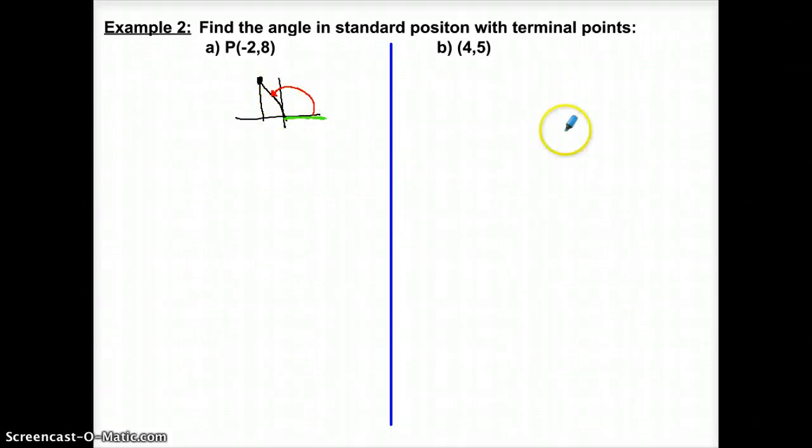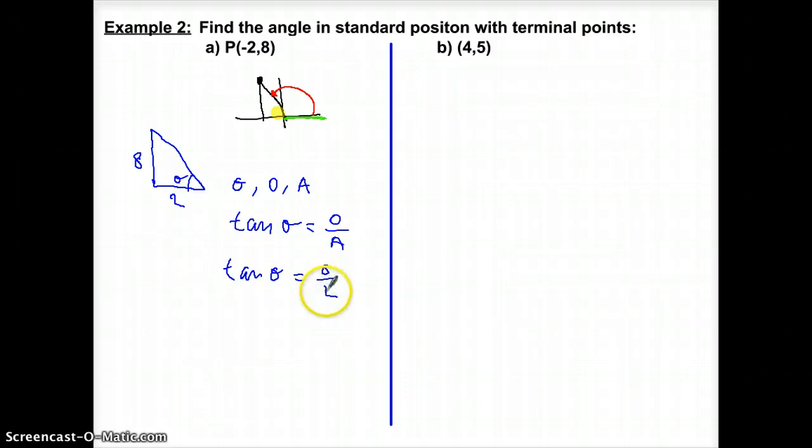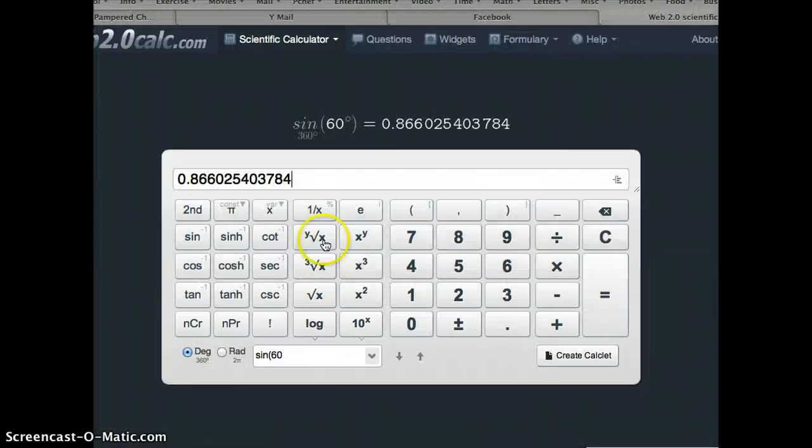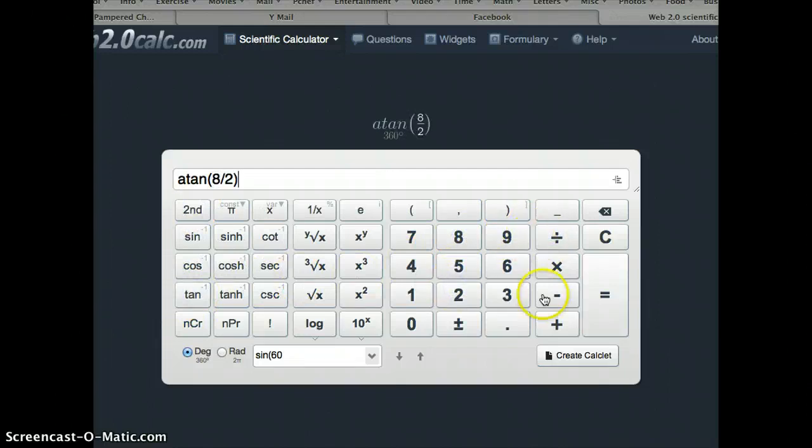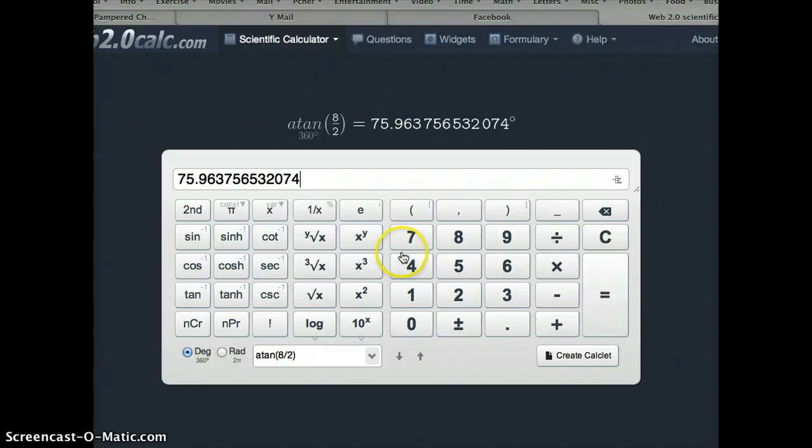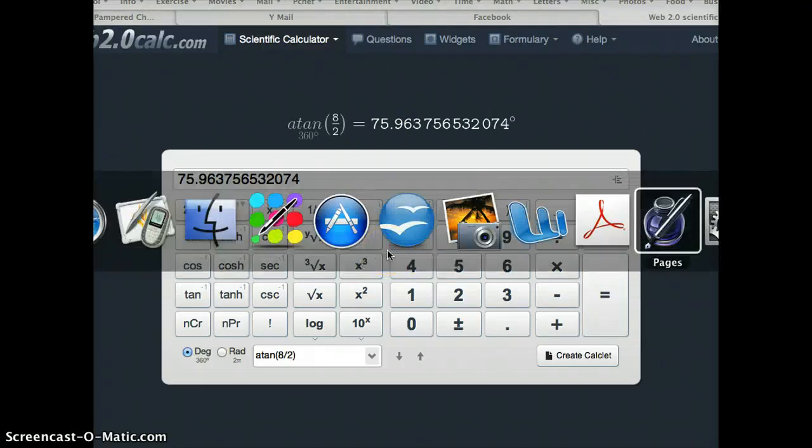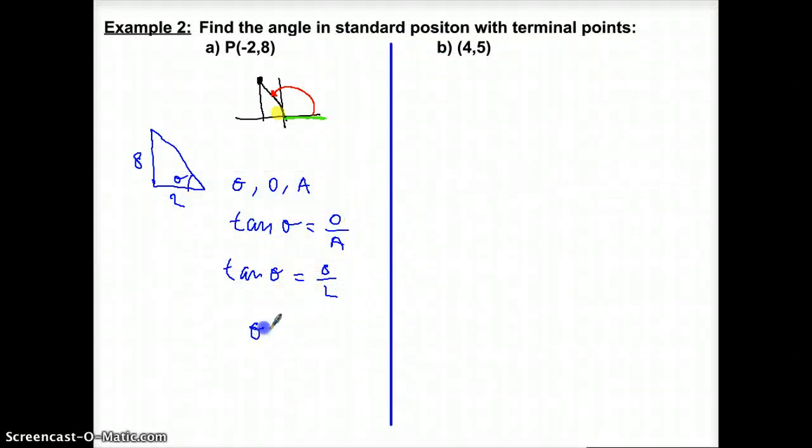But what I'm really going after is this angle, because that's standard position. Remember, standard position started on the green side, and that was the green side. So how do I find this angle? Well, it's easy. I could just find out that angle and then subtract it from 180. So I'm going to redraw my triangle to make it a little easier for me. It's not the scale, but that's 8, and that's 2. Now that's negative 2, but the distance is 2, right? So what do I have here? I have an angle, I have the opposite, and I have the adjacent. So that's tangent. Tangent of theta is equal to opposite over adjacent. Fill in the information. Tangent of the angle is equal to 8 over 2. 8 over 2 is 4.